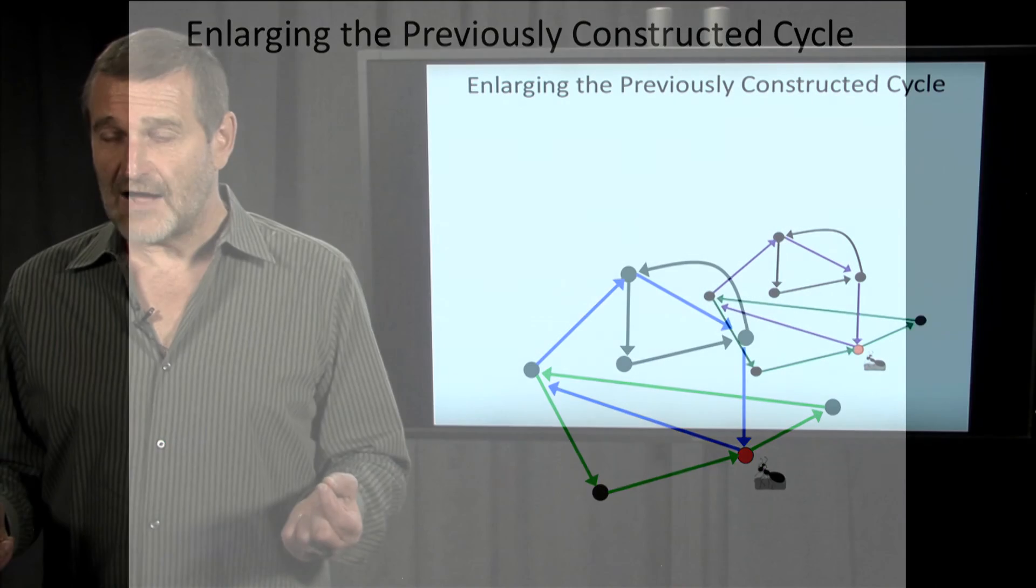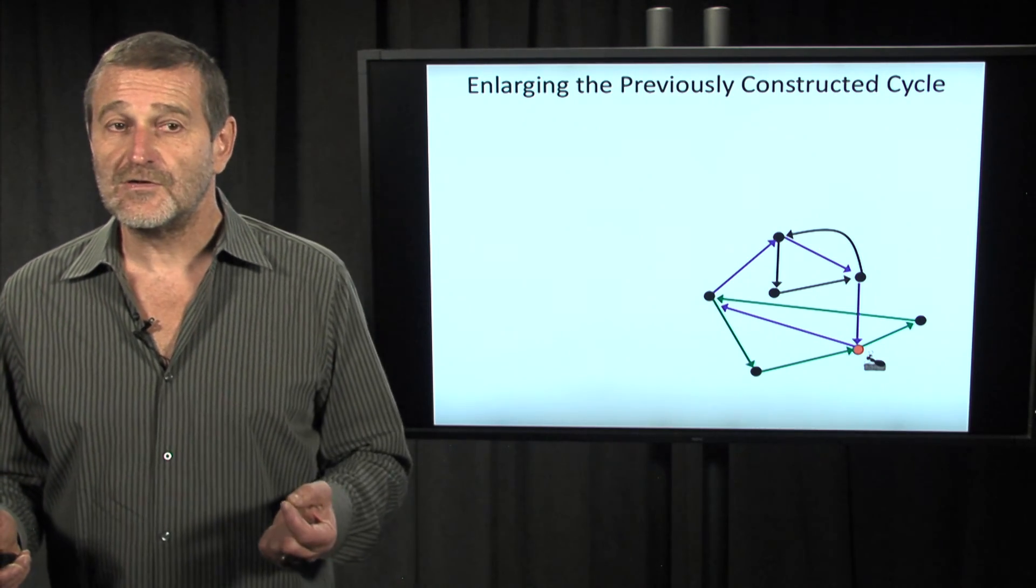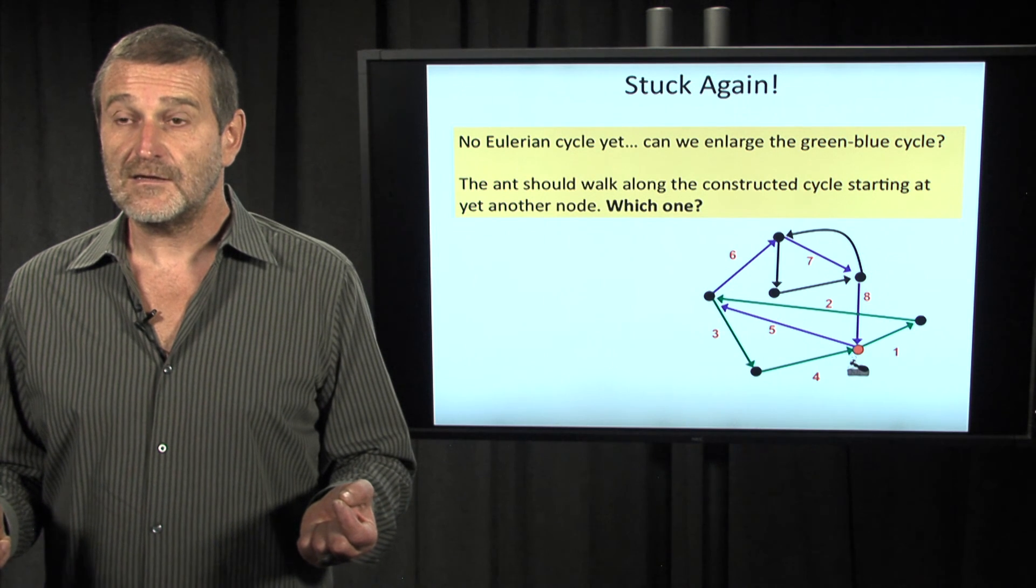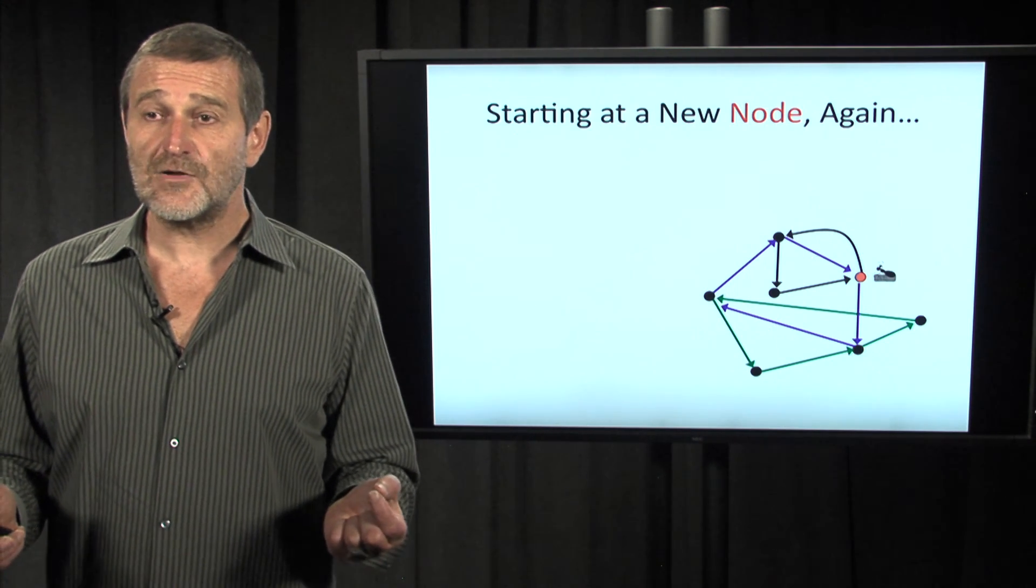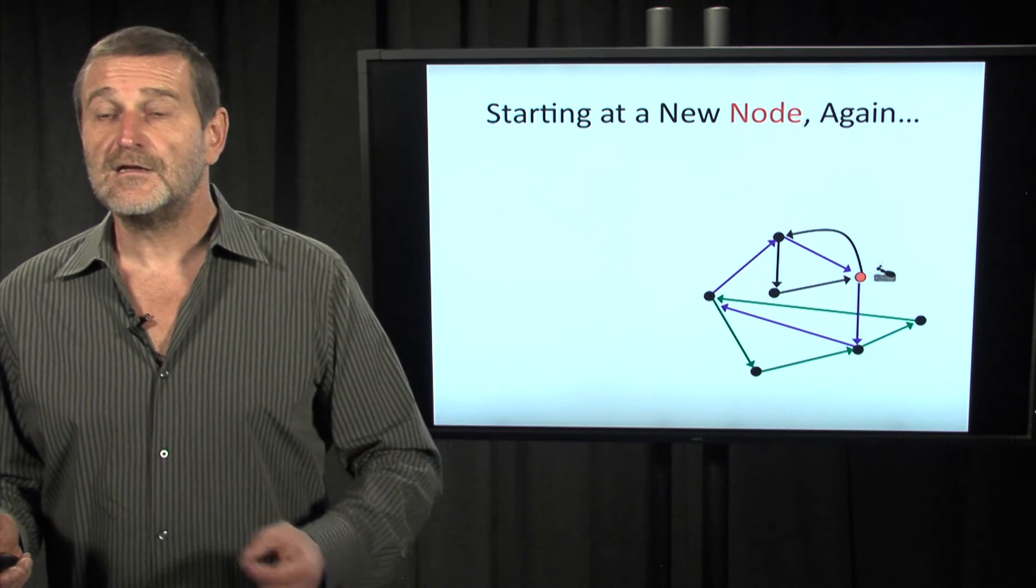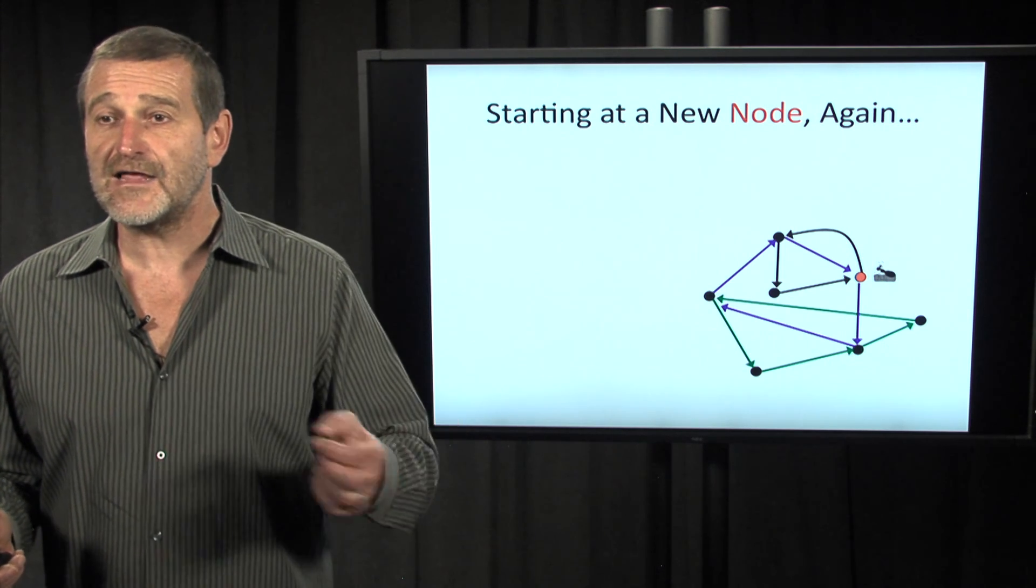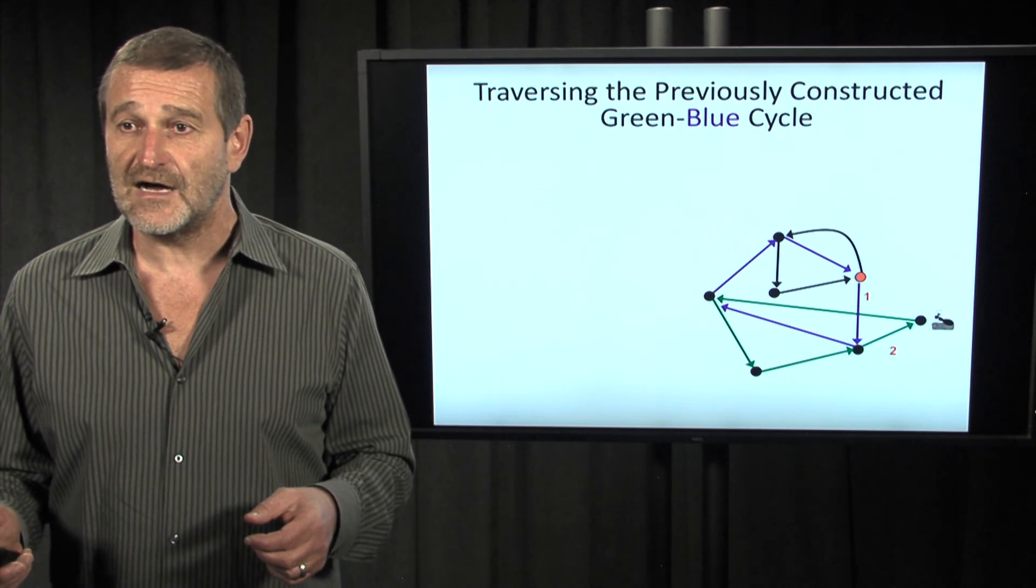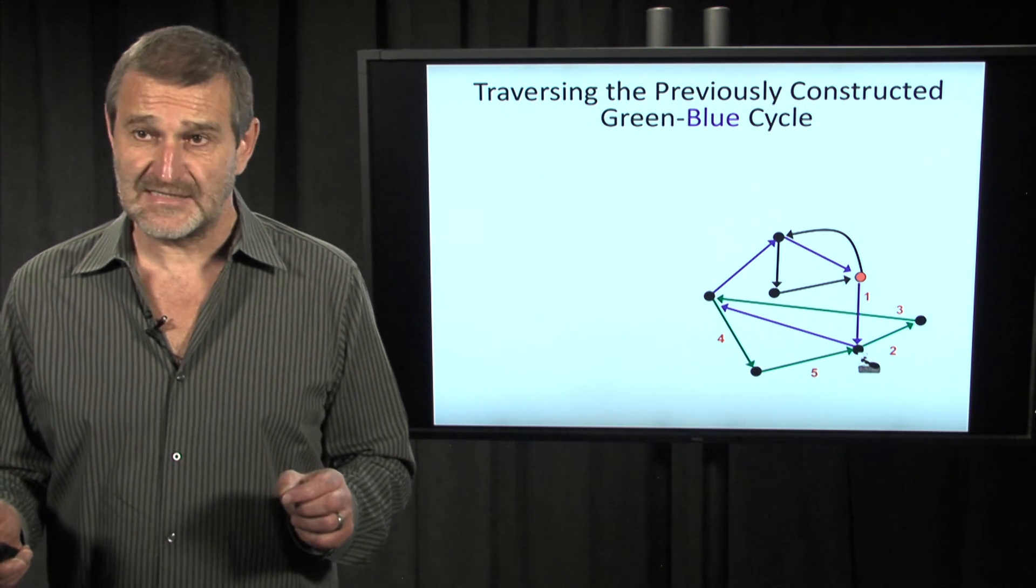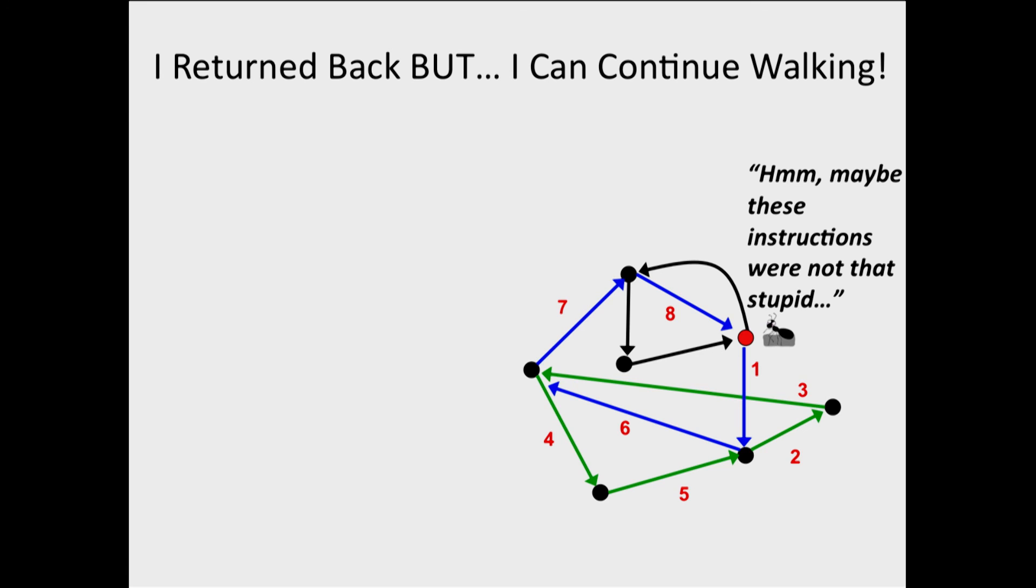What should we do afterwards? We should start at another node with still unexplored edges. Where is this node? Well, this is the node with still unexplored edges. The ant first will be ordered to traverse the cycles that have already been constructed—the green cycle, the blue cycle—and then continue exploring. The ant is not happy, but it continues and finally arrives at the initial node.